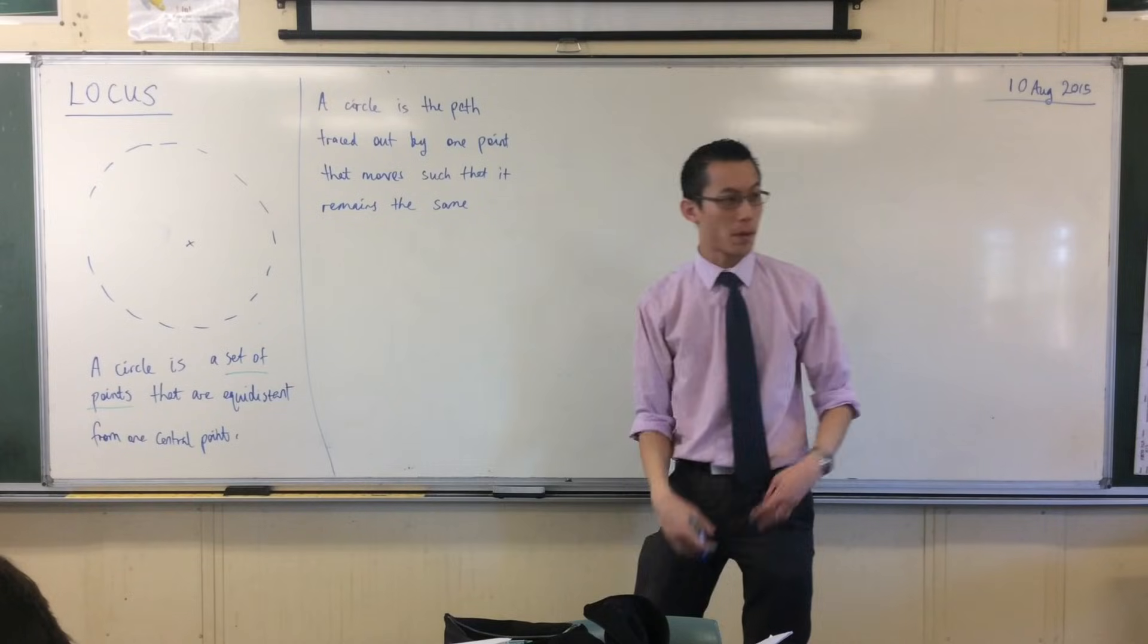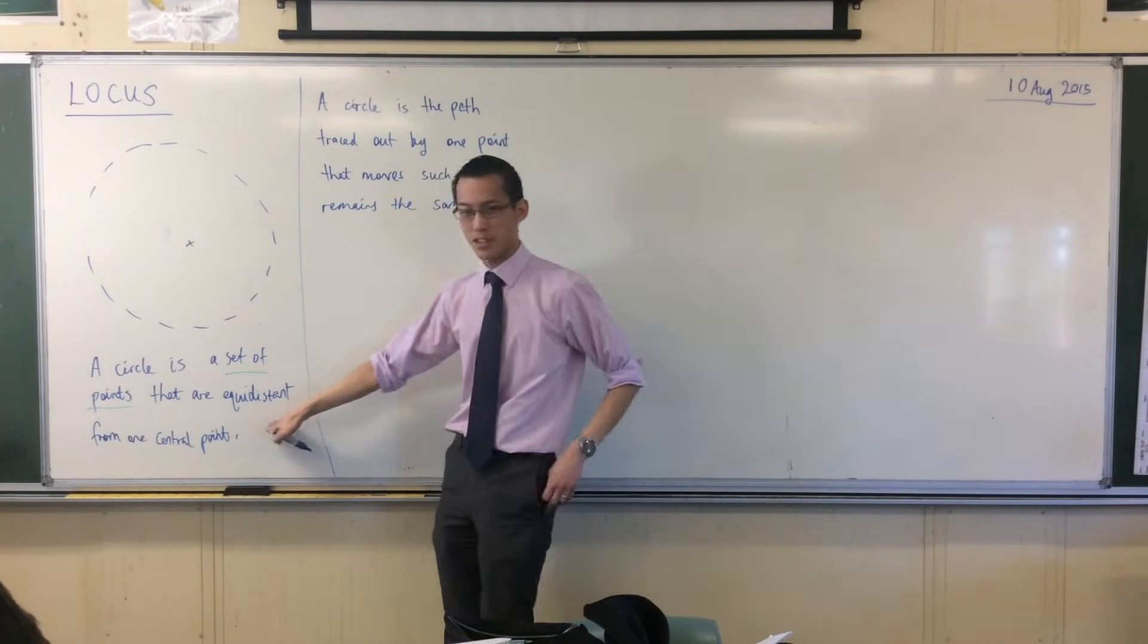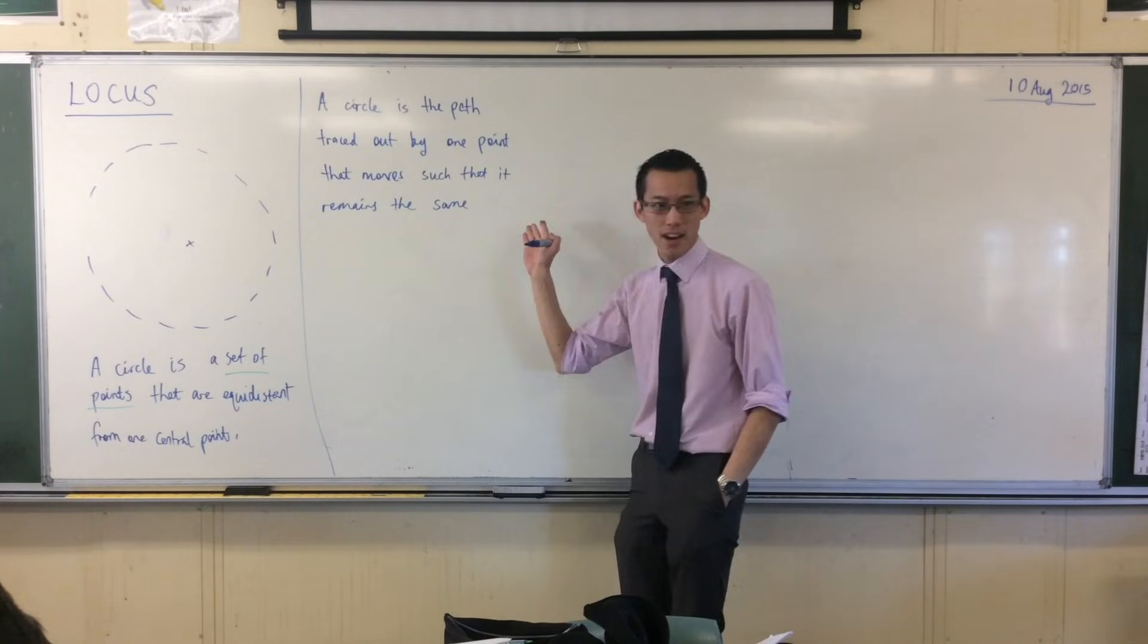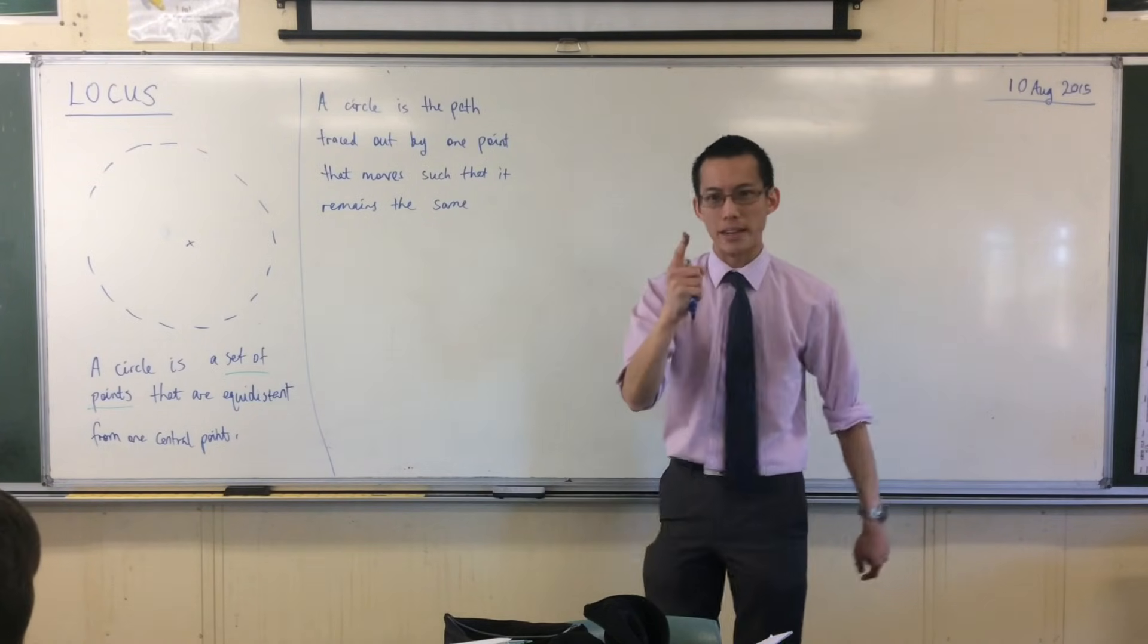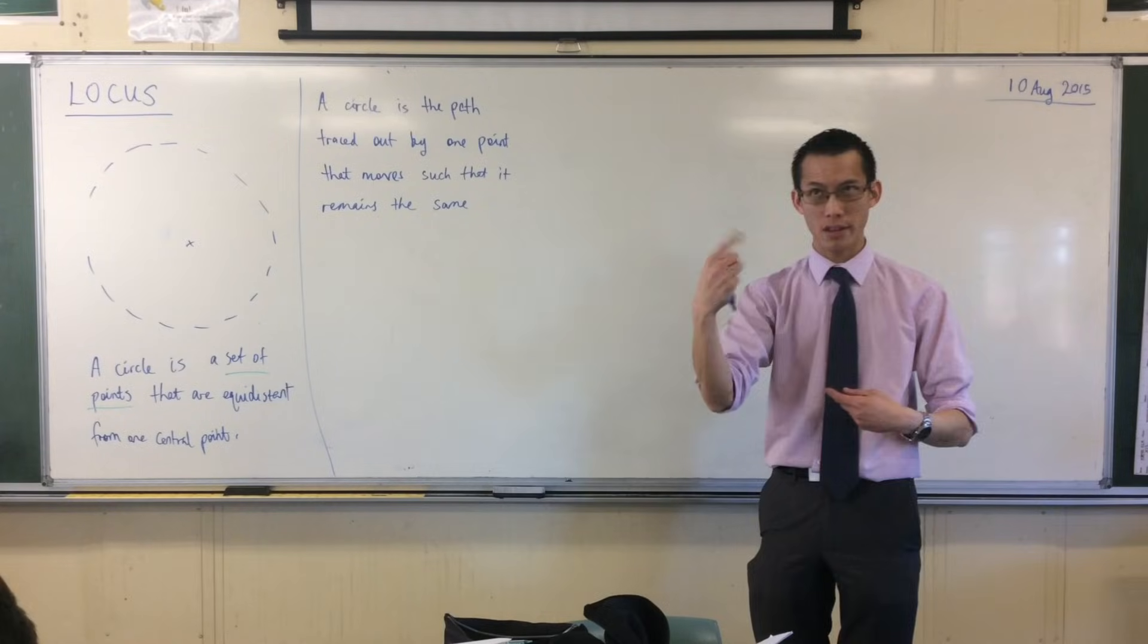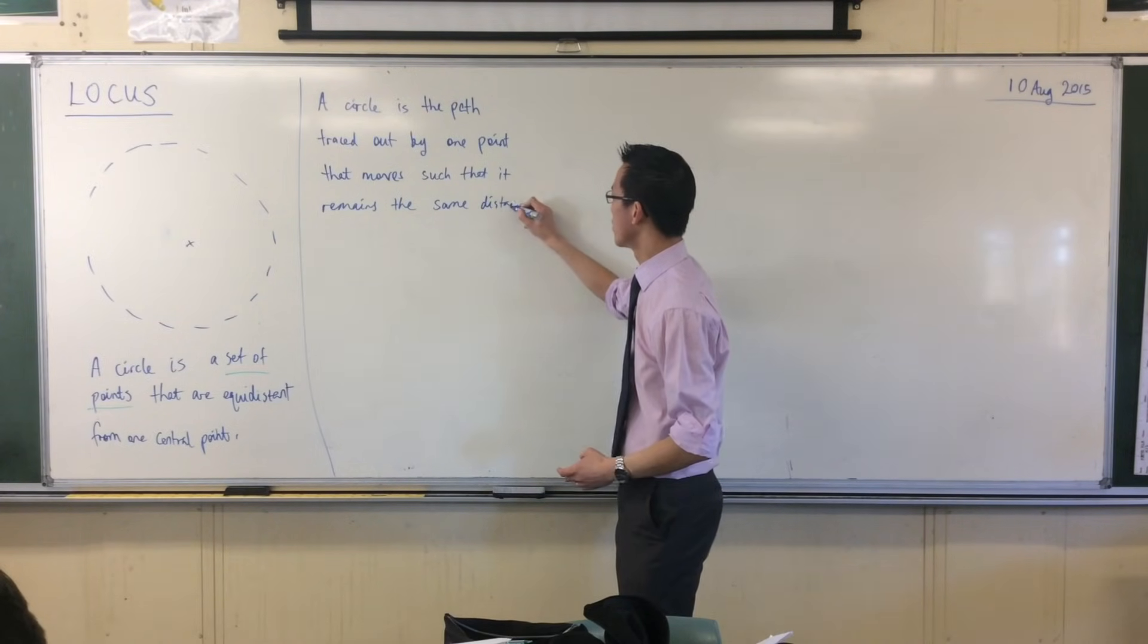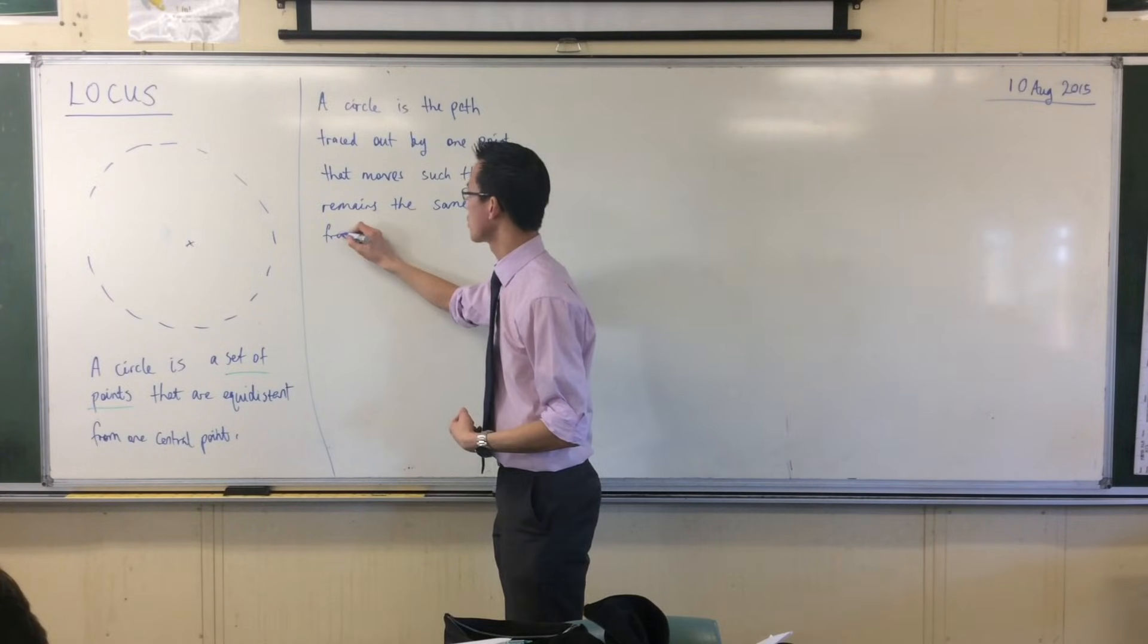Or you could say it remains at a constant distance, because it's not changing. It's a bit tricky to use the word 'equidistant' here because there's only one point, and you can't say one thing is equidistant to itself. You need two things to be equal. It remains the same distance from a central point.